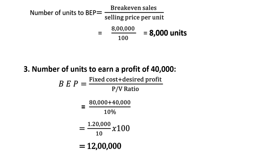Third, calculation of number of units to earn a desired profit of 40,000. Formula: break-even point equals fixed cost plus desired profit divided by P-V ratio. Fixed cost 80,000 plus desired profit 40,000 divided by 10% equals 1,20,000 divided by 10 multiplied by 100. The break-even point in rupees is 12 lakhs.